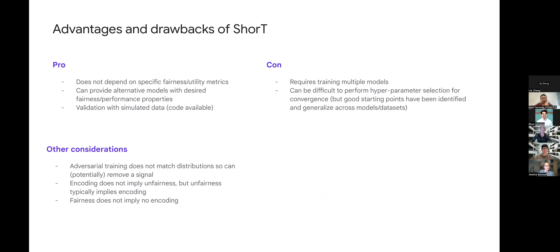As a conclusion, in terms of advantages and drawbacks of this technique, for advantages, it does not depend on a specific fairness or utility metric. You can use anything you want and consider potentially health equity or more downstream impact metrics. As a byproduct, it provides alternative models where you can pick more of your fairness-performance tradeoff. We have validated our findings with simulated data.